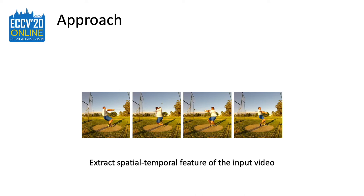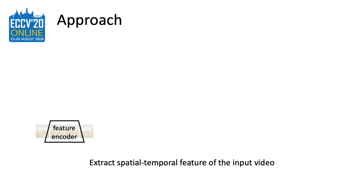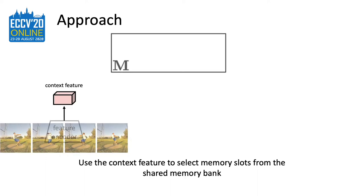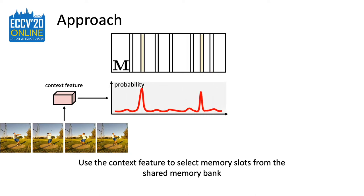Now I will briefly go through our approach. At the beginning, we extract the spatial-temporal feature from the input video clips to get a context representation. Then we prepare a shared memory bank, which just contains some vectors. To predict the future states, we simply infer a probability distribution over this memory bank, and the predicted future state is a convex combination of the memory slots. The memory bank is shared for all videos and simply contains trainable parameters that are optimized during self-supervised training. Ideally, the memory bank stores all the possible future states, and the model selects the corresponding future states for the given input video.